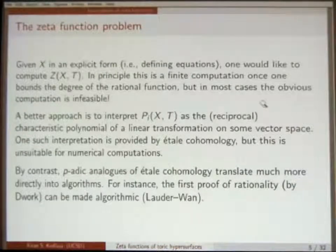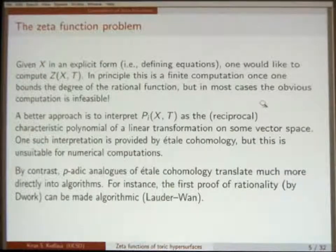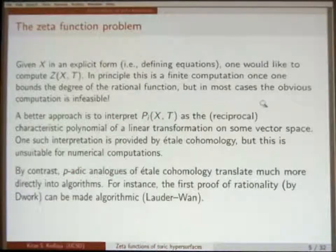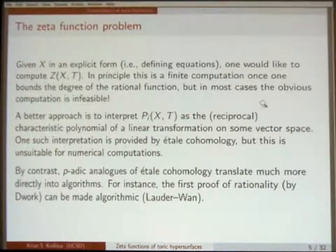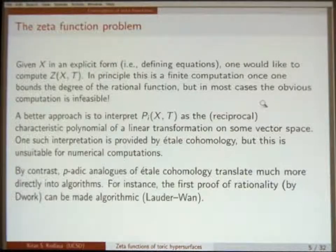By contrast, there is another approach to getting the properties of the zeta function — which in fact can prove the whole Weil conjectures — in terms of p-adic analogs of étale cohomology. These have the advantage that they are much more directly translatable into algorithmic computations. For example, Dwork's proof of rationality of the zeta function can effectively be turned into an algorithm.